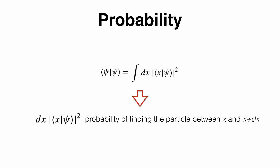The interpretation is that the probability of finding the particle between x and x + dx is given by dx times the square of the modulus of ⟨x|ψ⟩, because the square modulus is a probability density. A density must be multiplied by a length scale to give probability. This starts to be reminiscent of what you learned in quantum physics with wave functions.